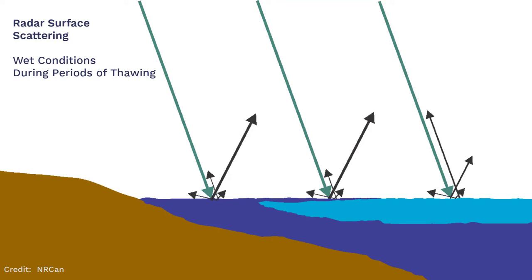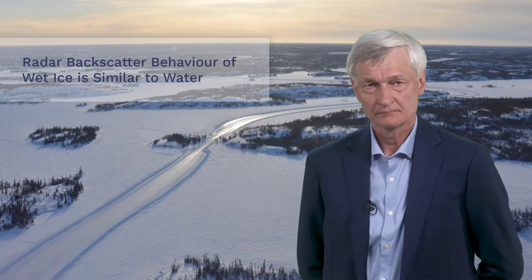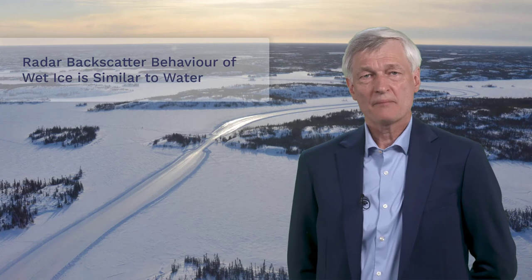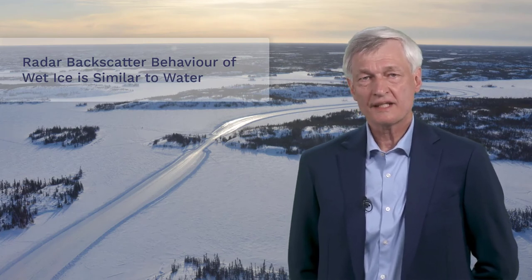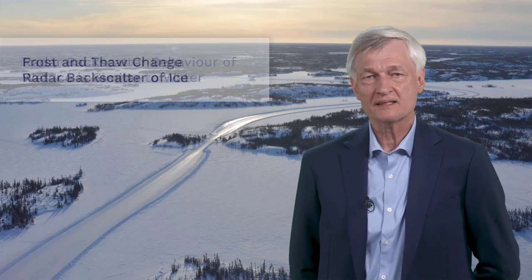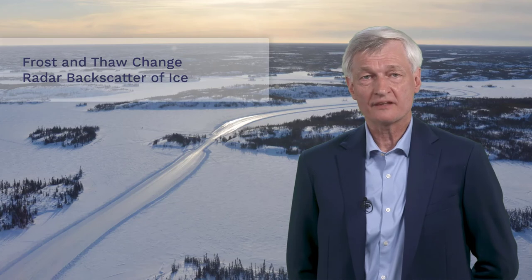The intensity of the return signal will depend on the roughness of the observed interface. In fact, the backscatter behavior of wet ice is very similar to that of water. By affecting penetration and interaction, frost and thaw change the appearance of freshwater ice in radar images and, more importantly, alter what ice cover information is captured.